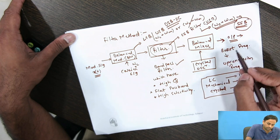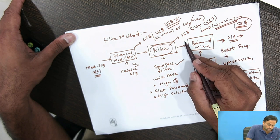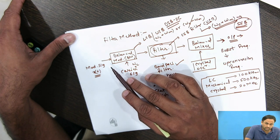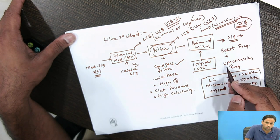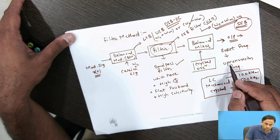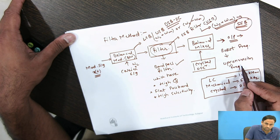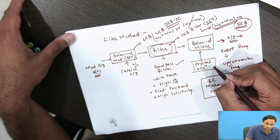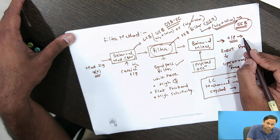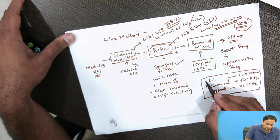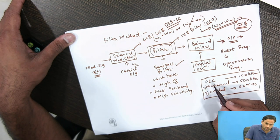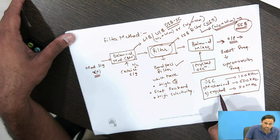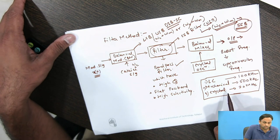The output frequency of the filter is the same as the input, so we cannot directly transmit it. We boost that frequency using up-conversion, done via the balanced mixer and crystal oscillator, and then transmit it. The filters used in this method are LC filters, mechanical filters, and crystal filters. Thank you.